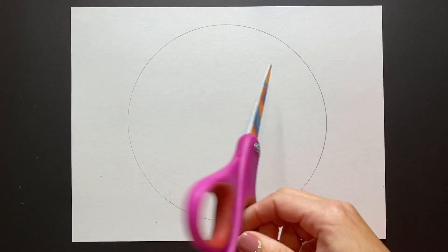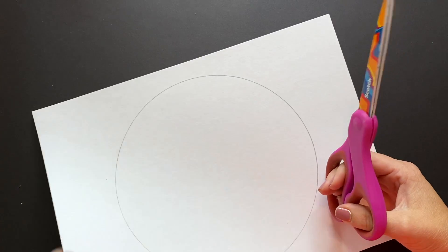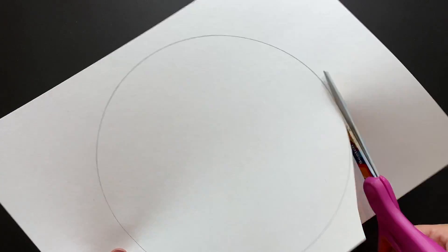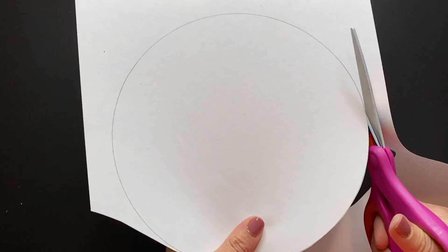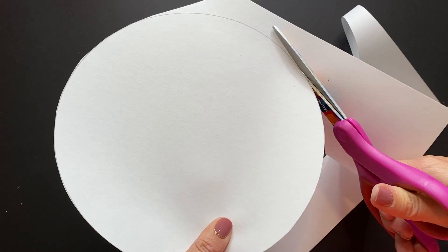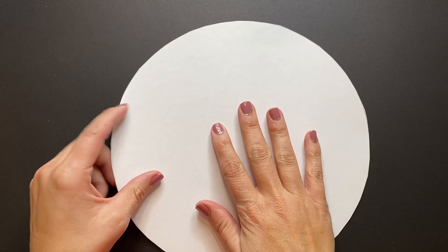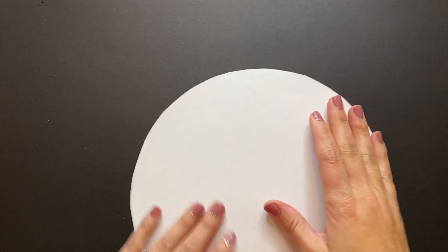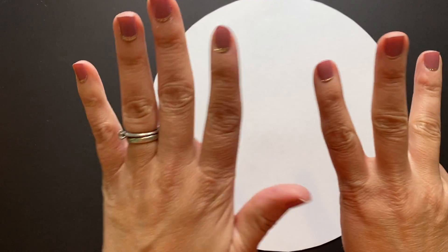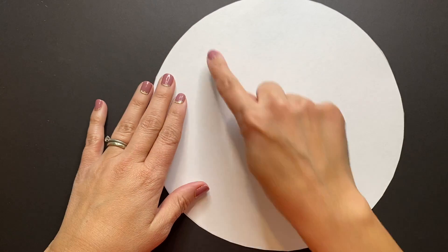Next, grab your scissors and carefully cut your circle out. Once you have your circle cut out we are going to begin to fold it in eight equal or congruent parts, so that means each size is exactly the same.